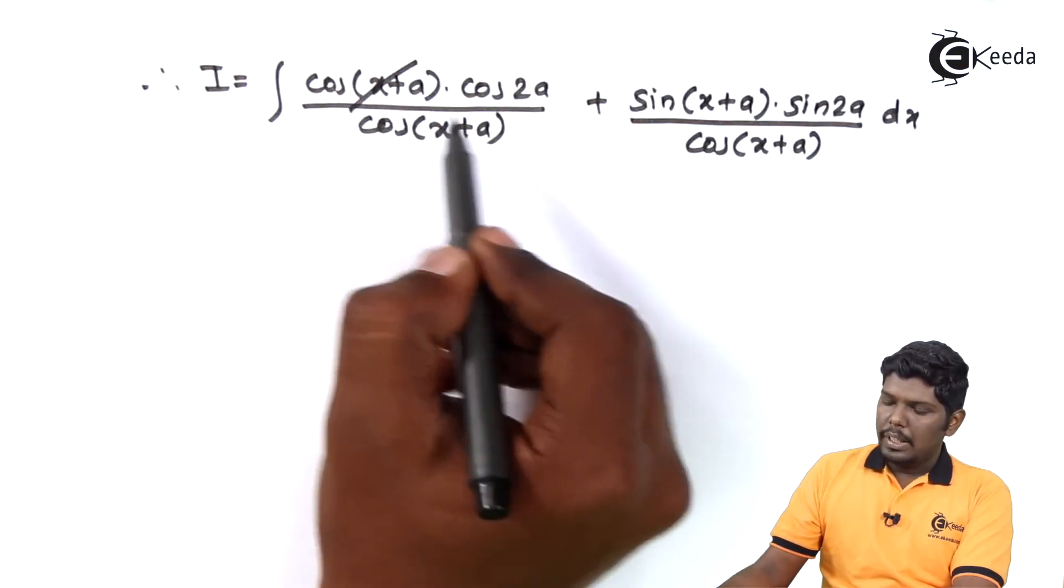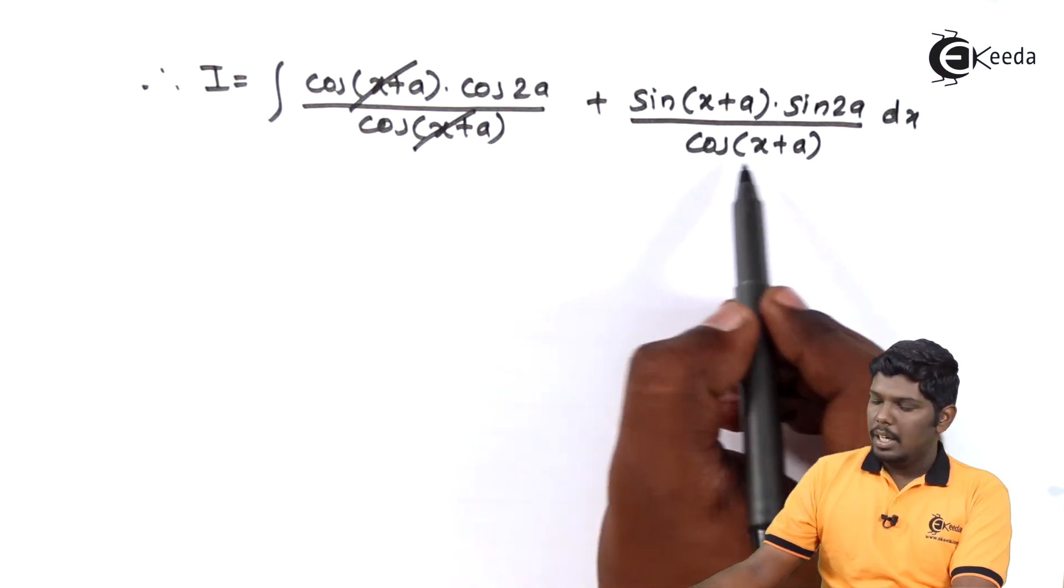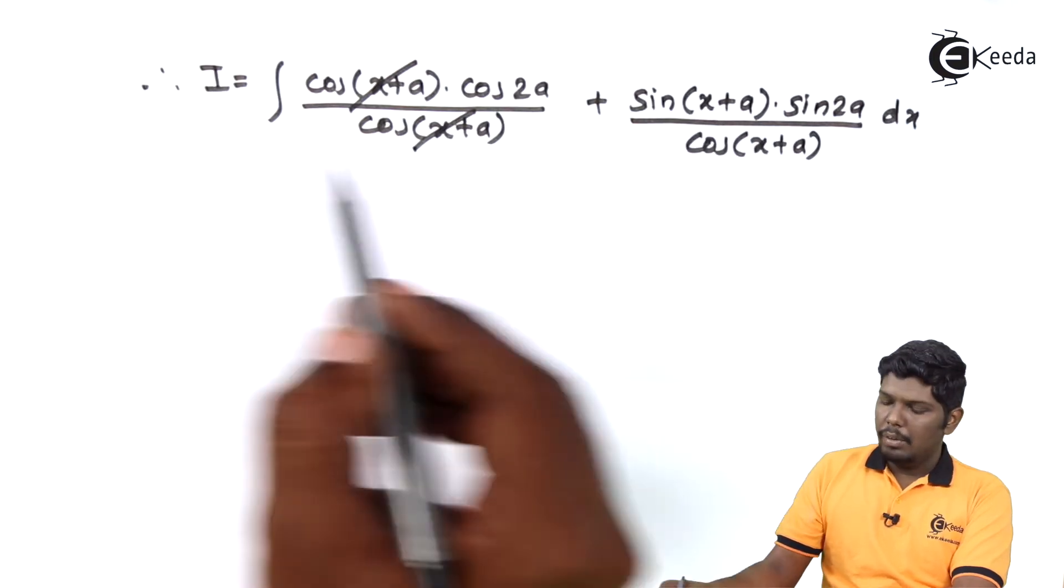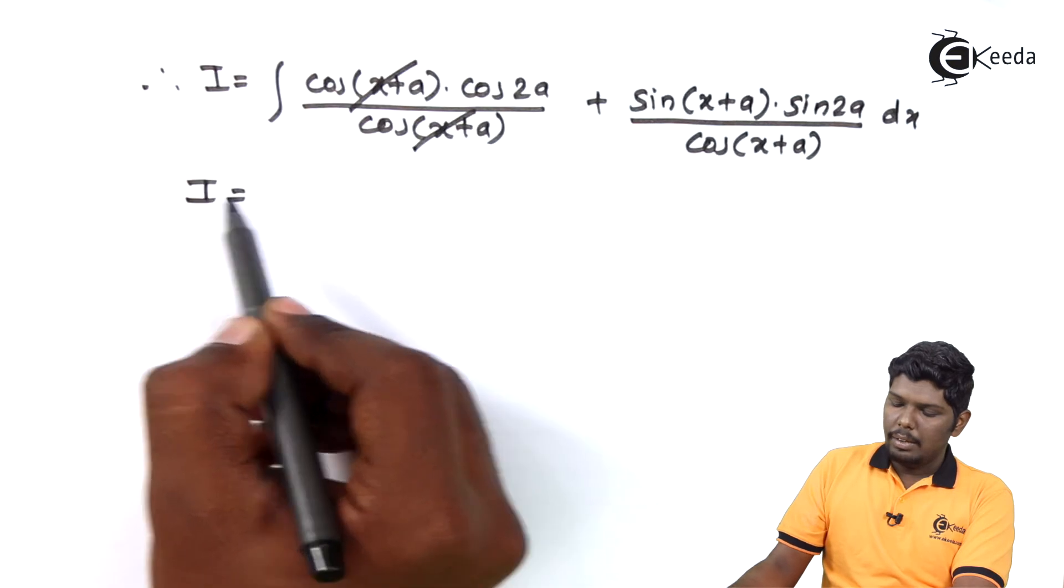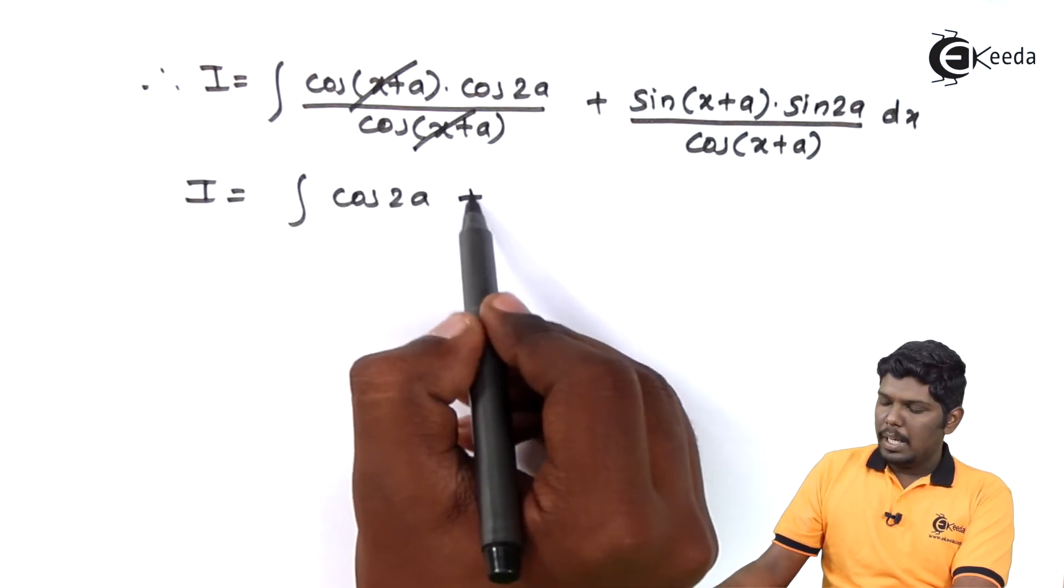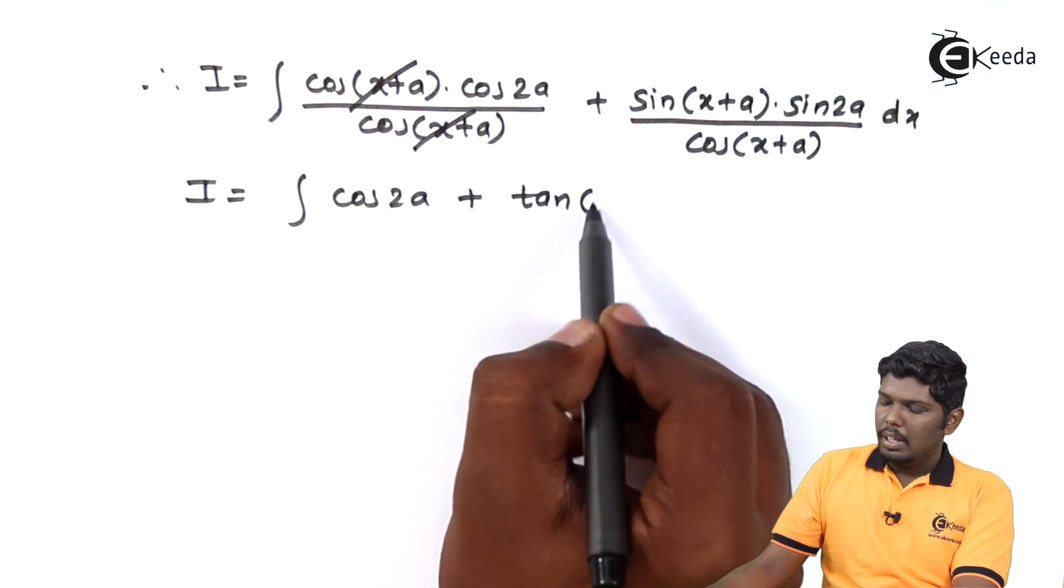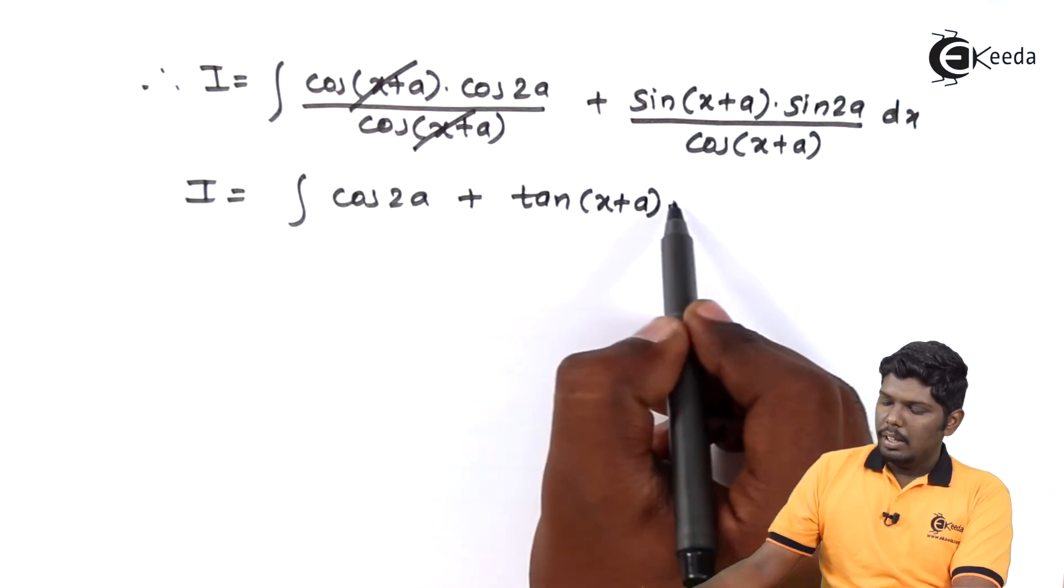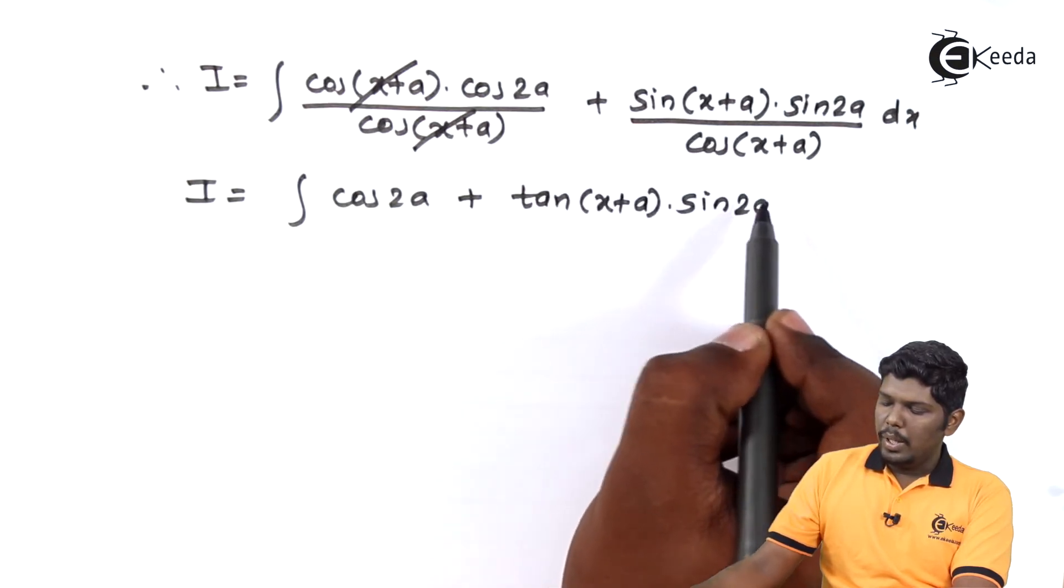Here cos of x plus a will be cancelled and here sin of x plus a upon cos of x plus a will give you tan of x plus a. Integral cos 2a plus tan of x plus a into sin 2a dx.